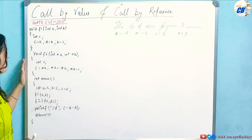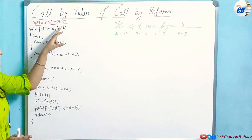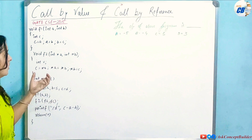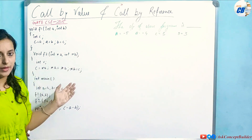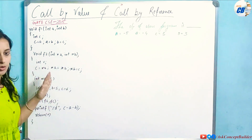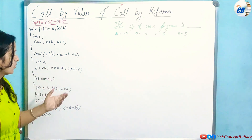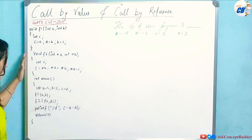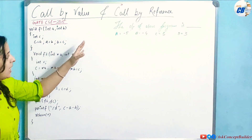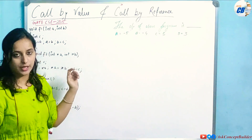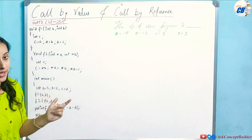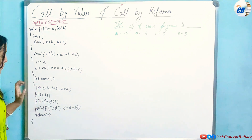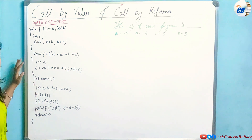I will discuss this in detail by solving a GATE CSE 2015 previous year question. This will make call by value and call by reference clearer, and you will also get a previous year question solved. A program is given and you are asked to find the output. Execution starts from the main function.